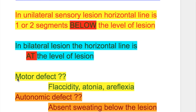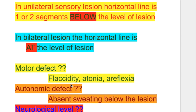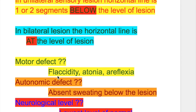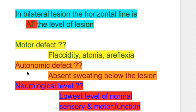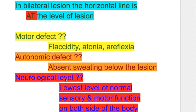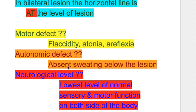What is the upper limit of motor defects at the horizontal line? There is flaccidity, atonia, and areflexia due to involvement of the anterior horn cell. For autonomic defects, there is absent sweating below the level of the lesion.